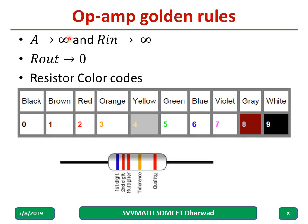Op-amp golden rules to remember: gain is always infinity, input resistance is also infinity, and output resistance is zero. One should also know the resistor color code so that you can choose a particular resistance value.